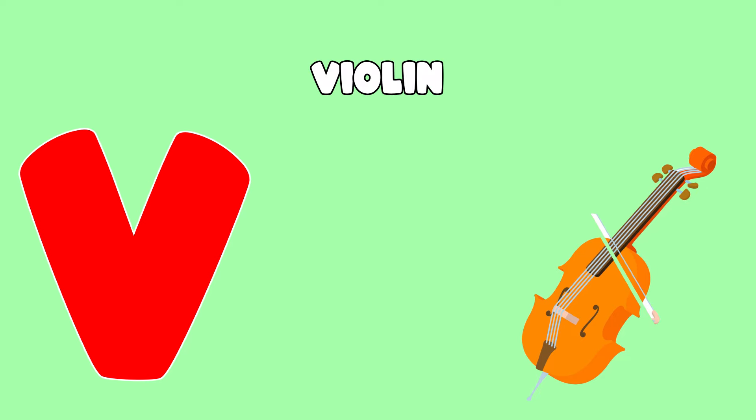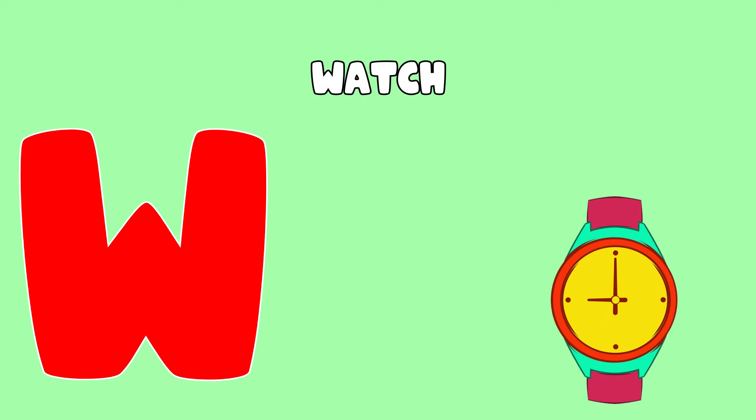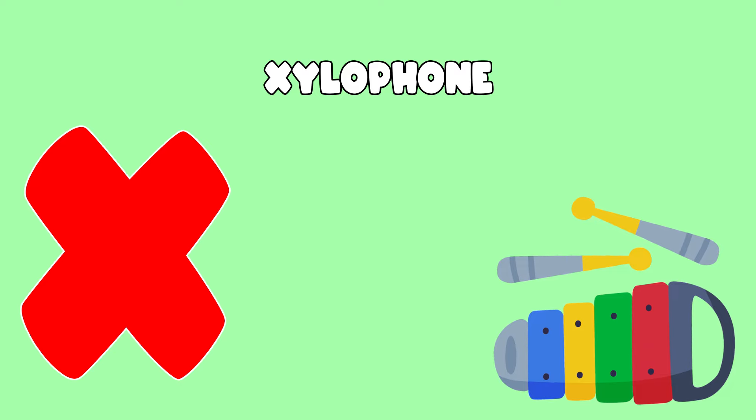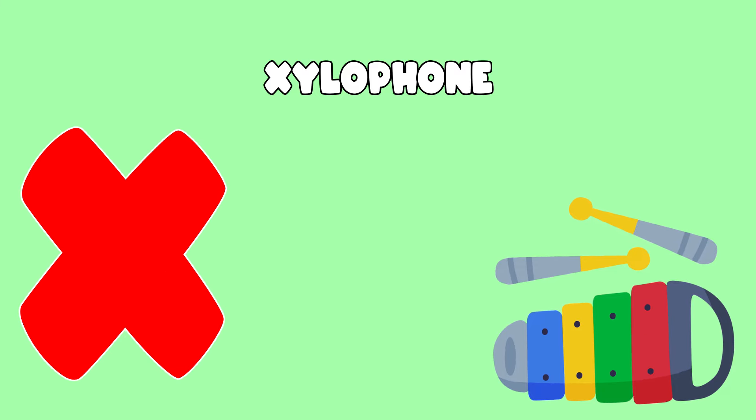U is for umbrella. U, umbrella. V is for violin. V, violin. W is for watch. W, watch. X is for xylophone. X, xylophone.